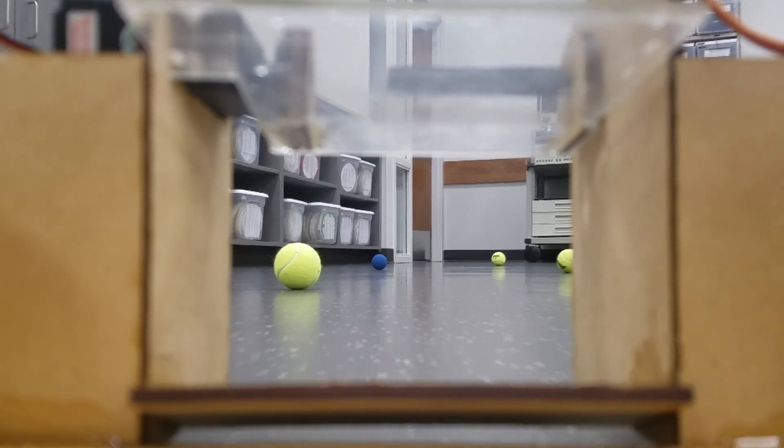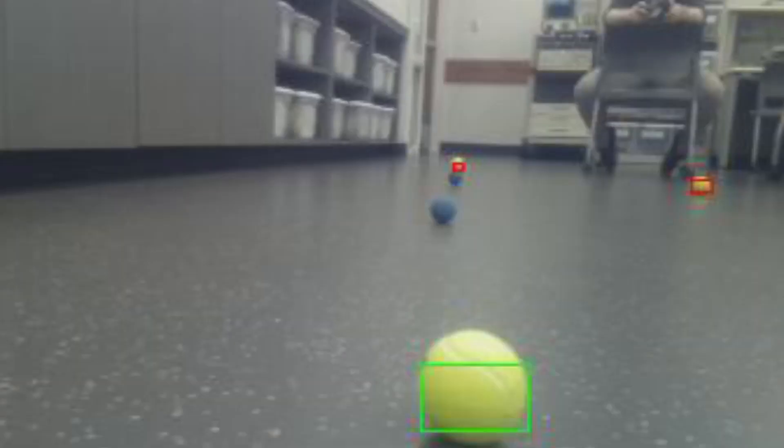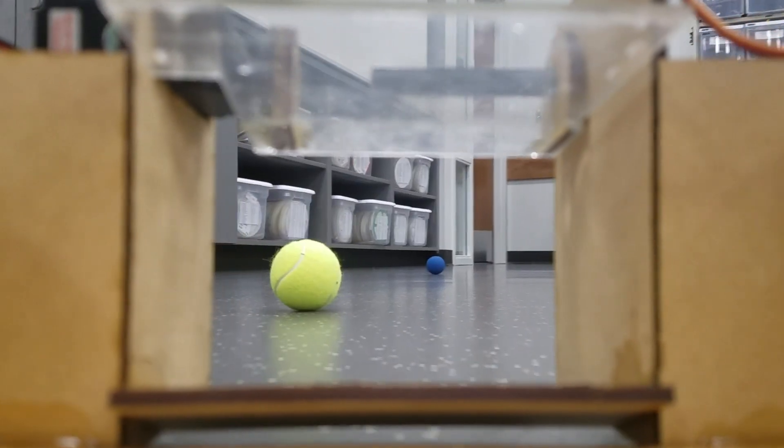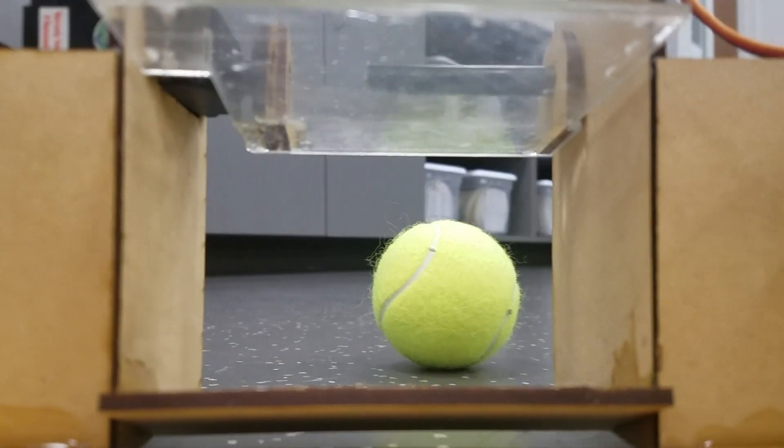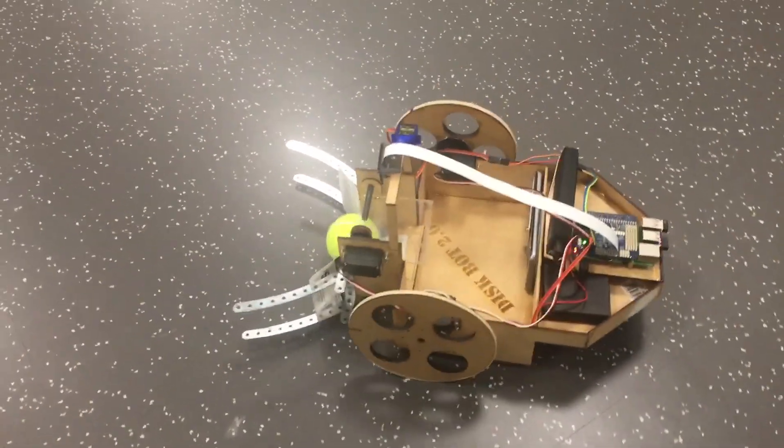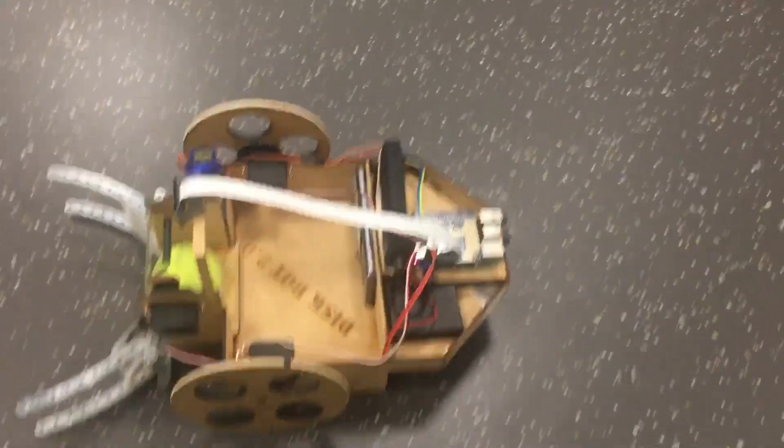Once the tennis ball is located, it will change its angle and try to go straight towards it. However, because the servos do not have an encoder, the position does need to be calibrated, so once it reaches 50% of the distance, it will go ahead and correct its angle.